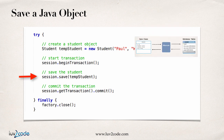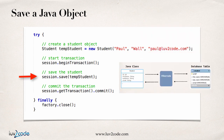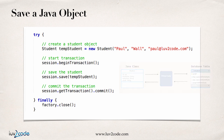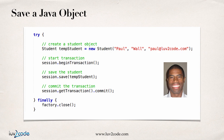Behind the scenes, Hibernate knows how to connect to our database based on our configuration file, and knows how to map this student class to the actual database based on the annotations we covered in the previous video. So here session.save puts it in the database, and then I do a commit on the transaction — session.getTransaction().commit() — which actually stores it. There's also a rollback method if you're not happy with a transaction. That's the basic happy path for saving a Java object to the database.